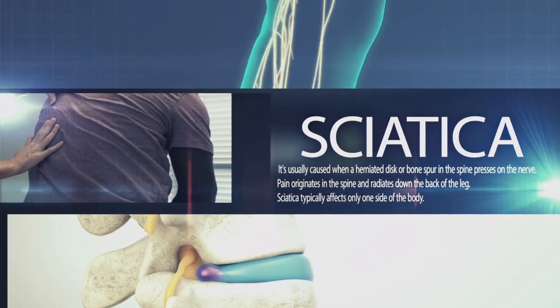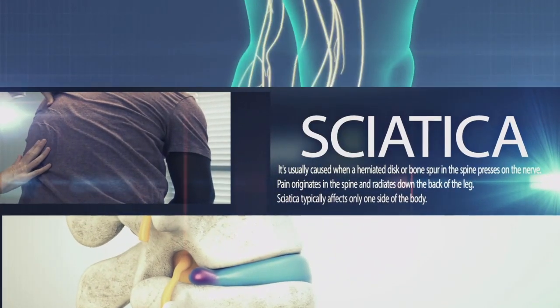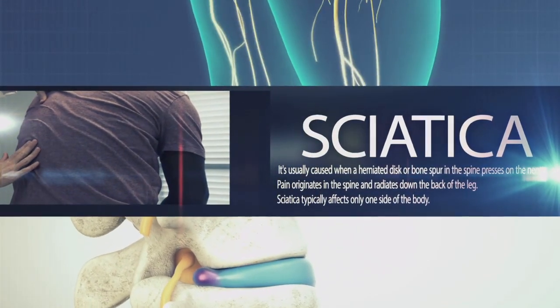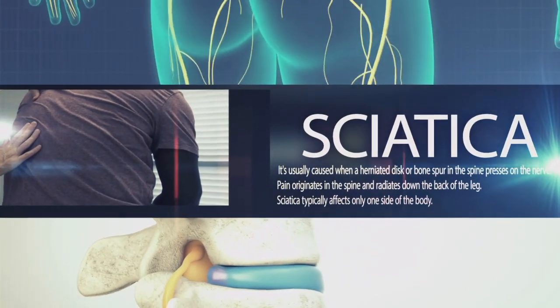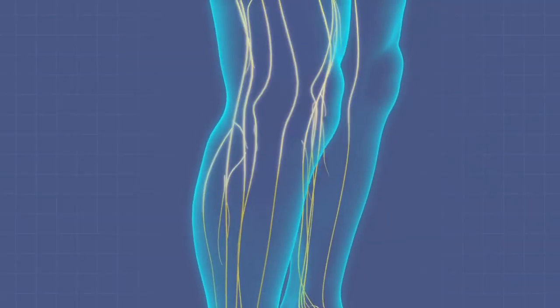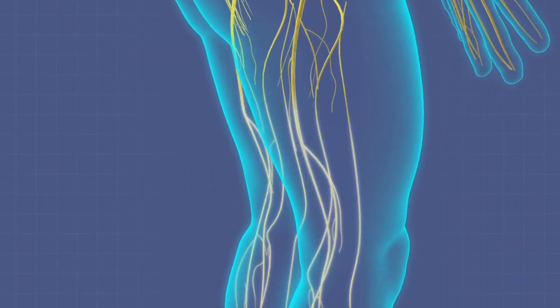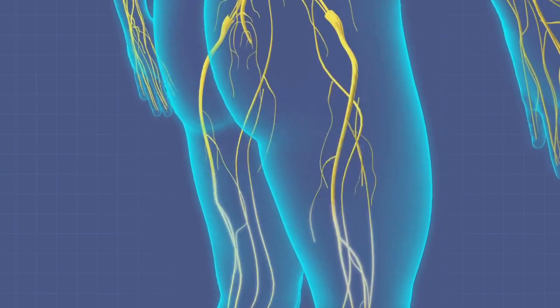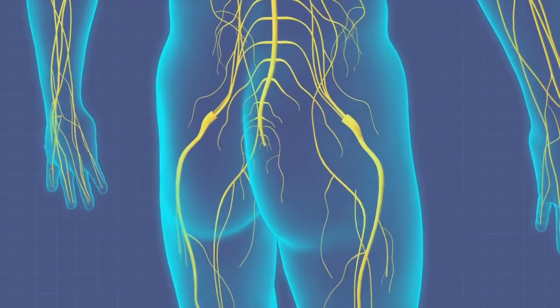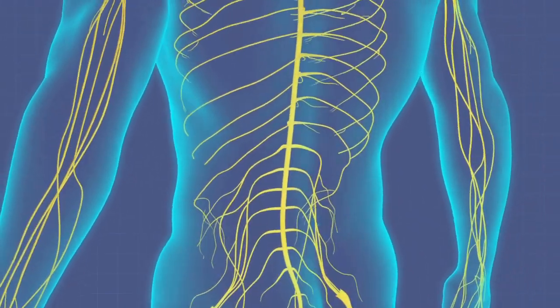The sciatic nerve is a combination of these four nerves that contribute to that main nerve, that sciatic nerve. These are nerves that come out of the spinal canal.